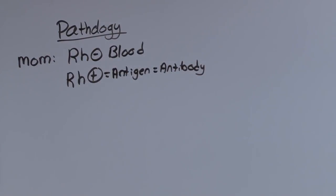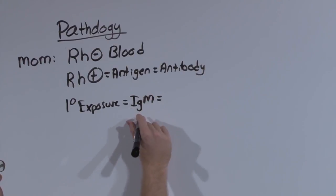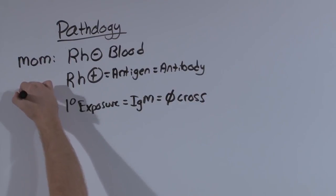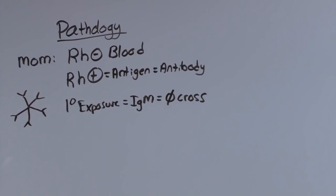On first exposure, that is the first time the body encounters an antigen, which is true in this case as well, the initial response, the primary exposure, is IgM. And IgM is a huge molecule and it cannot cross the placenta. IgM forms a pentamer, so it is too large to get through.